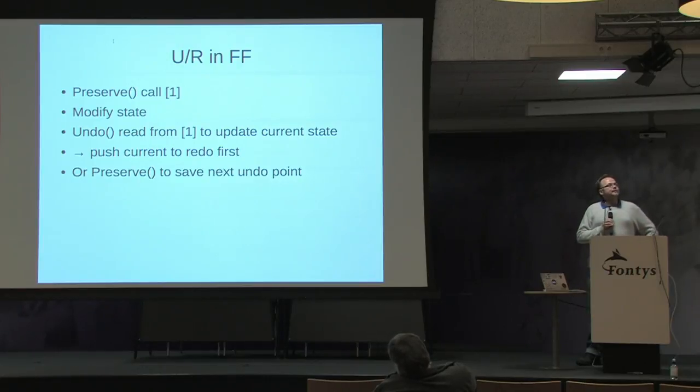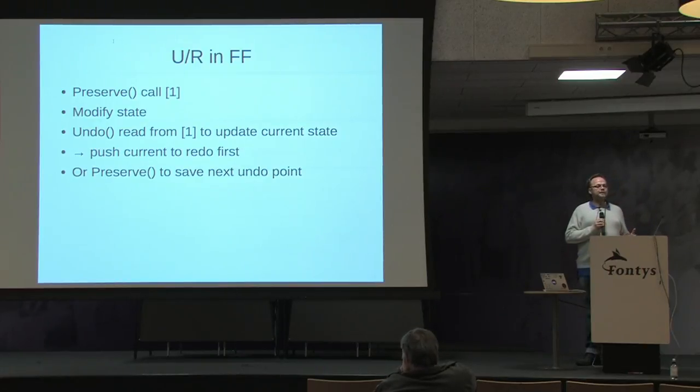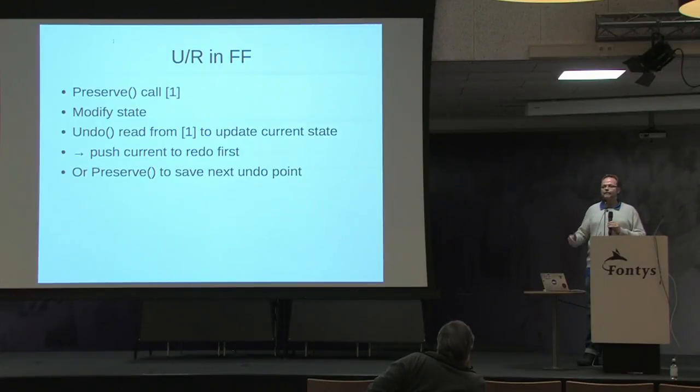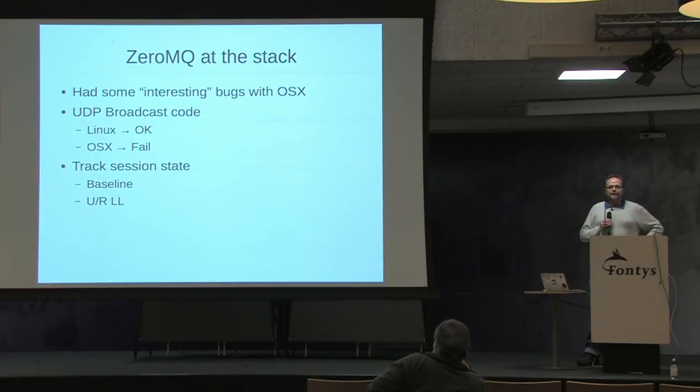The way undo and redo works in FontForge: there's a preserve call made at a time when an undo is desirable. You modify local program state, then snapshot the state and push it onto the redo stack. The undo can read from where you called preserve to go back in time. Like most programs, you call undo which clones state, you modify local program state, and if you call the same snapshot function again it creates a delta between then and now, building a stack you can use to go back to a blank document.